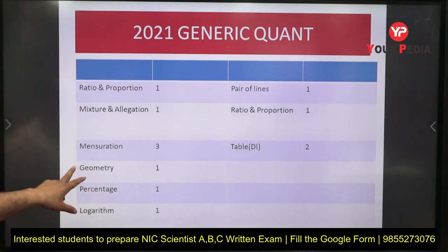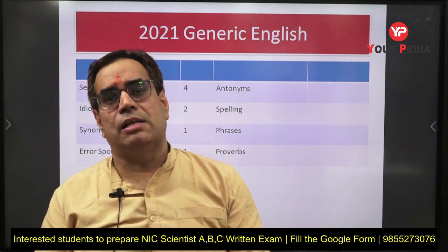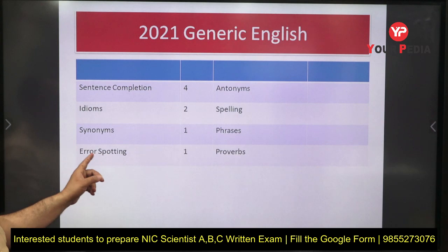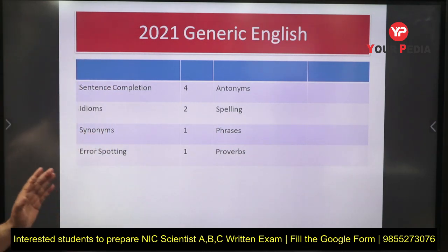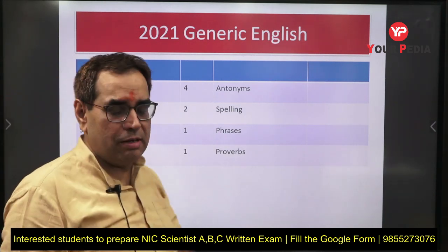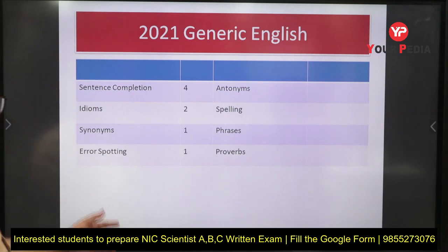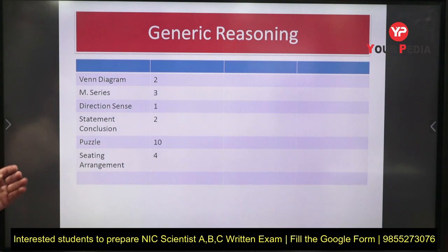In the 2021 paper, there were also some questions from English. Sentence completion — four questions; idioms — two questions; synonyms — one question; error spotting — one question. Other important topics include antonyms, spelling, phrases, and proverbs. English is not separately mentioned in the syllabus, but based on the question paper pattern, questions can be asked from English, and these will be easy questions to prepare.